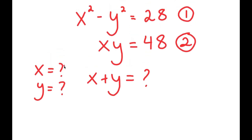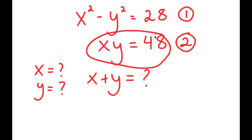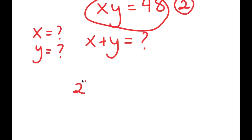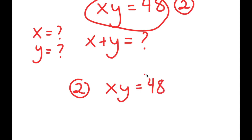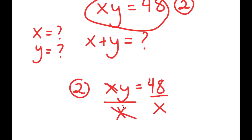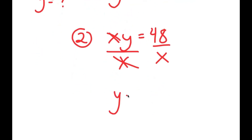To start, I'm going to use equation 2: x times y equals 48. I'm going to solve for one variable in terms of the other — specifically for y. To isolate y, I divide both sides by x, and I get y is equal to 48 over x.